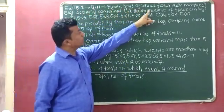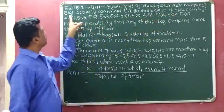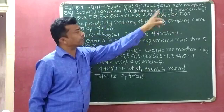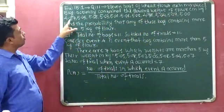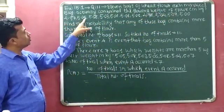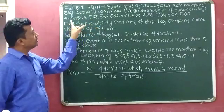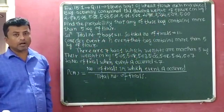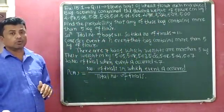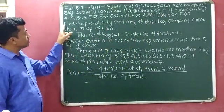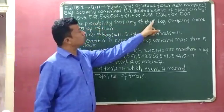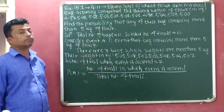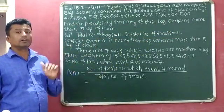11 bags of wheat flour, each marked 5 kilograms, actually contain the following weights of flour in kilograms: 4.97, 5.05, 5.08, and others. Our question is: find the probability that any of these bags contains more than 5 kilograms of flour.